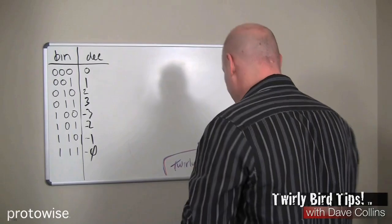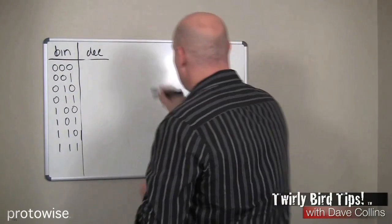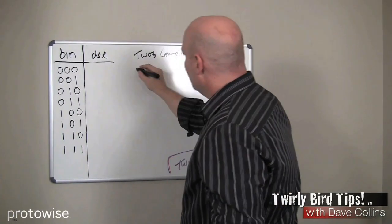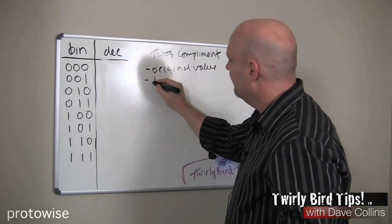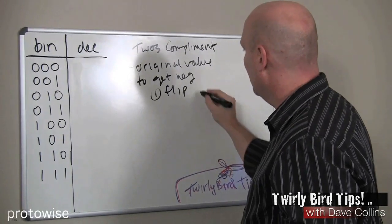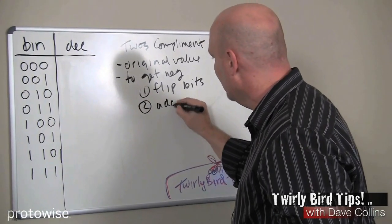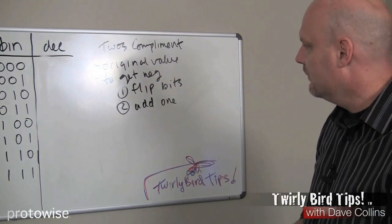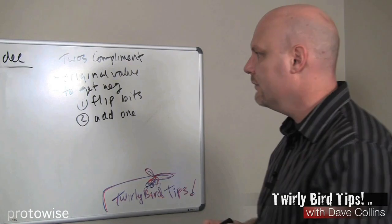Two's complement is really nice in that it solves these problems. With two's complement, to get the negative of an original value, we do a couple of things. Just like with one's complement, we flip the bits first, and then we add one. That's it — that's all there is to two's complement. If I have an original value and want the negative, I flip the bits and then add one.